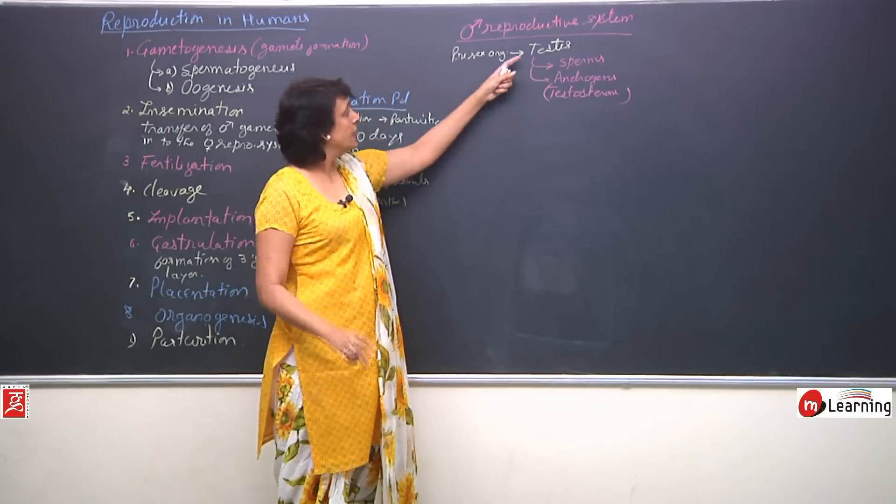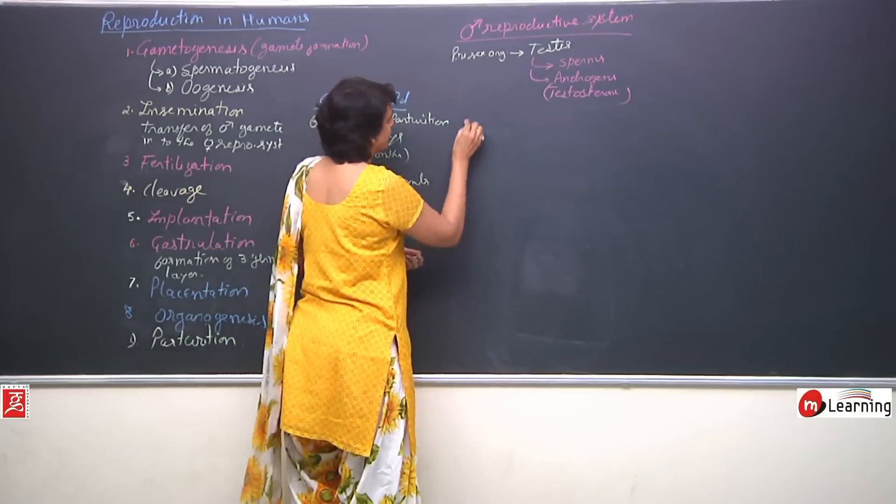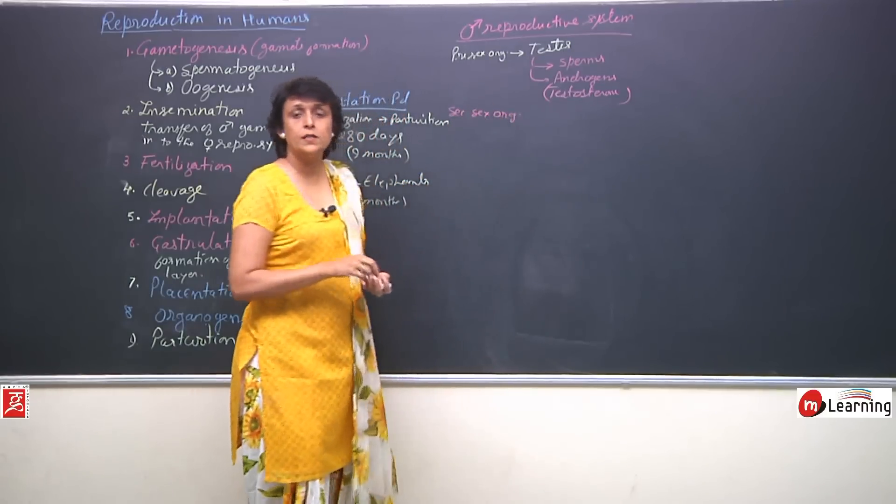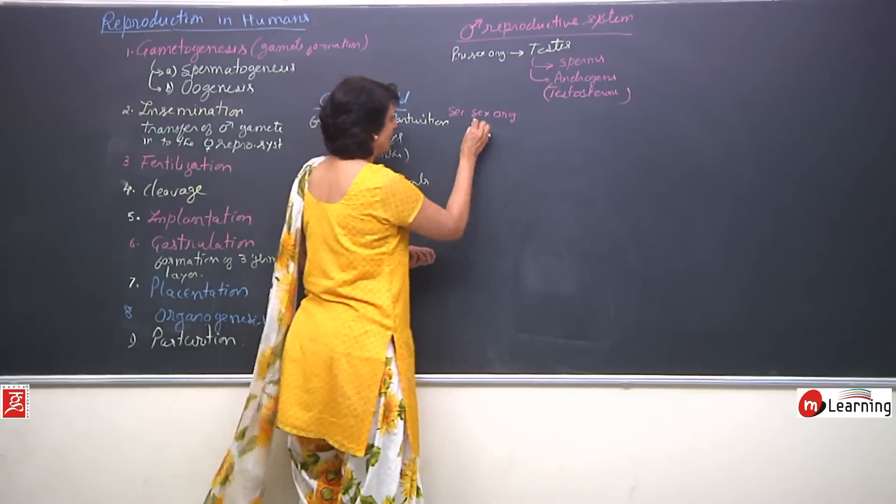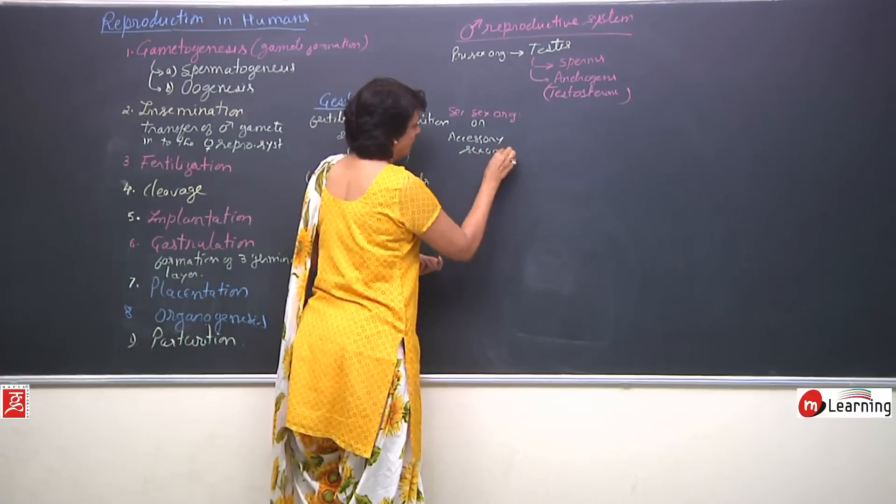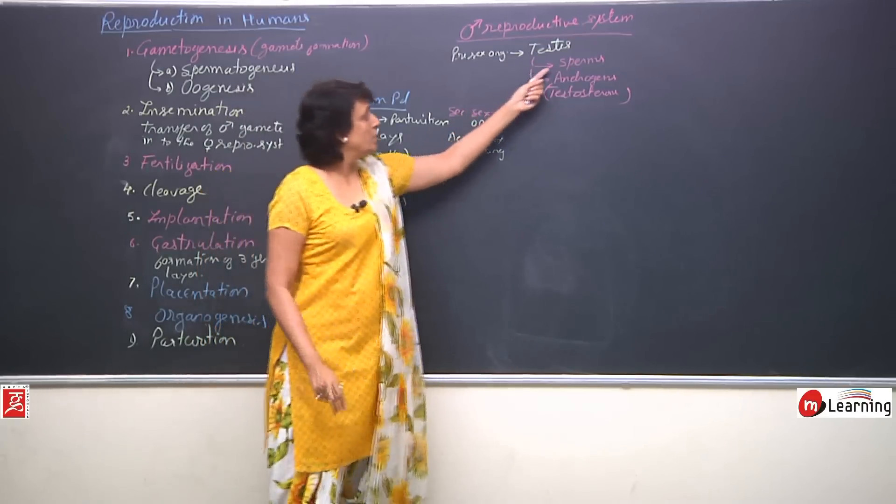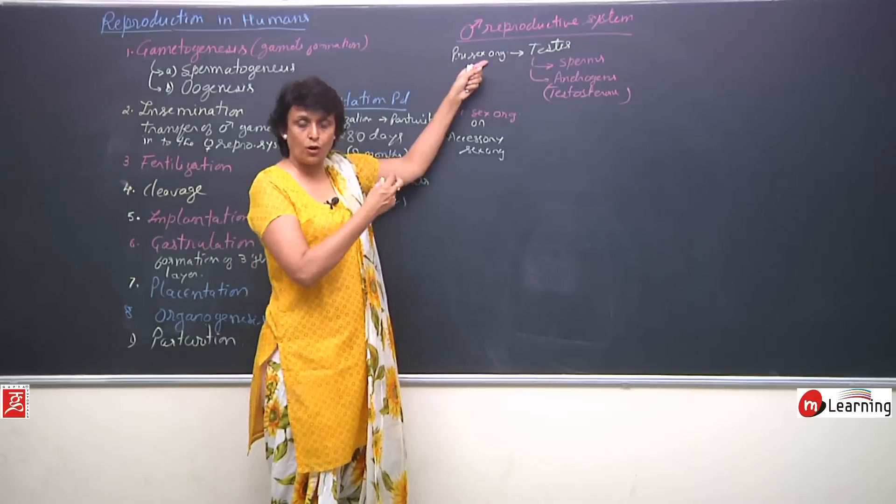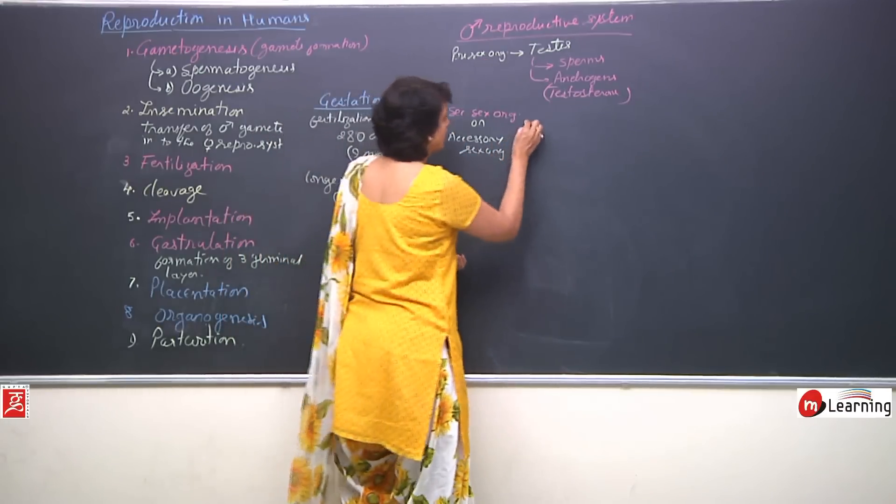So, two things are done by the primary sex organ that is a pair of testes. Then secondary sex organs, secondary sex organs are the ones which help and that is why they are also known as accessory sex organs. So, these are the structures which are going to help, they do not produce sperms or the hormones. So, the male function is performed by the main organ and that is why it is called primary sex organ. These are all just helping structures. Which are these helping structures?